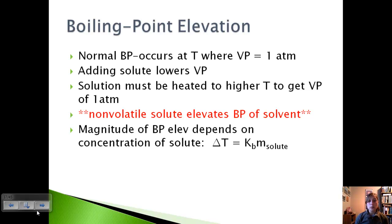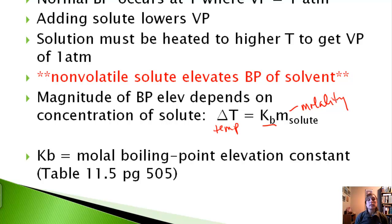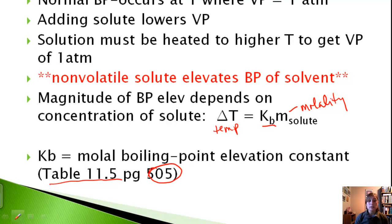The magnitude of the boiling point elevation depends on the concentration of the solute. We can calculate that using delta T, which represents temperature, equals KB times small m. This represents molality. If you remember at the beginning of the chapter we talked about all those ways to calculate concentration, this is where that's coming back. K sub B represents the molal boiling point elevation constant, and you can find all of these on table 1.5 on page 505 in your book.